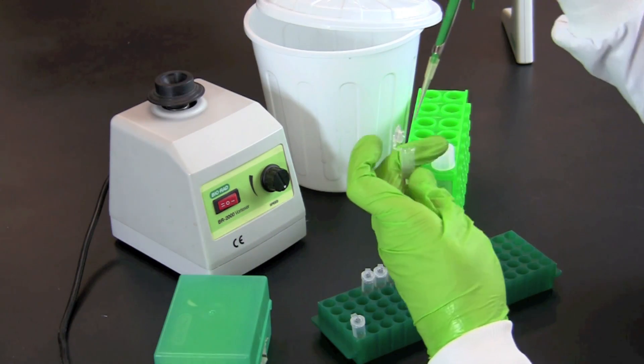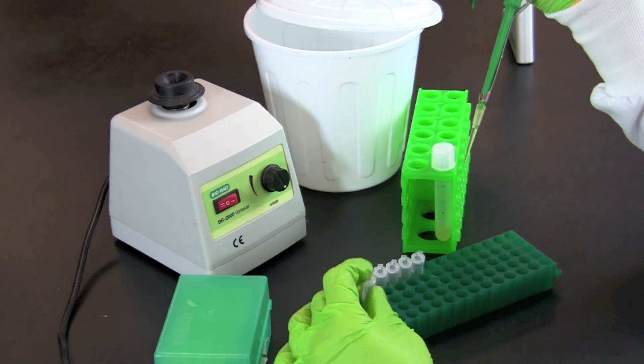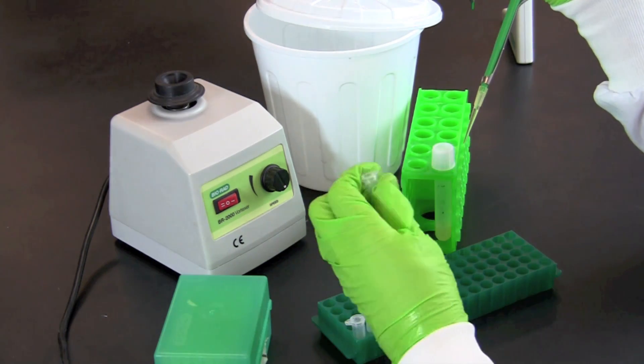Continue to serially dilute the bacterial culture into each consecutive tube until the tube labeled 10 to the 7th is used.